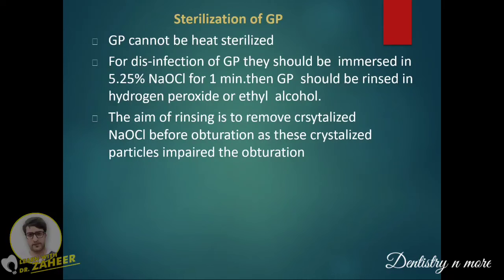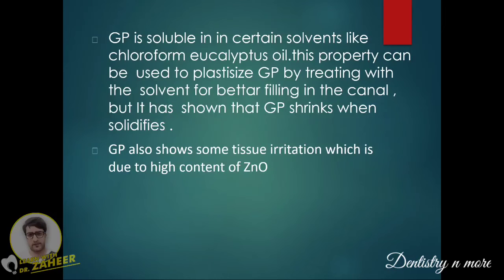Gutta percha cannot be heat sterilized. For disinfection, immerse it in 5.25% sodium hypochlorite for one minute, then rinse in hydrogen peroxide or ethyl alcohol. The aim of rinsing is to remove crystallized sodium hypochlorite before obturation, as crystallized particles impair the obturation process. GP is soluble in solvents like chloroform and eucalyptus oil — this property can be used to plasticize GP for better canal filling, but it has been shown that GP shrinks when it solidifies. GP also shows some tissue irritation due to its high zinc oxide content.